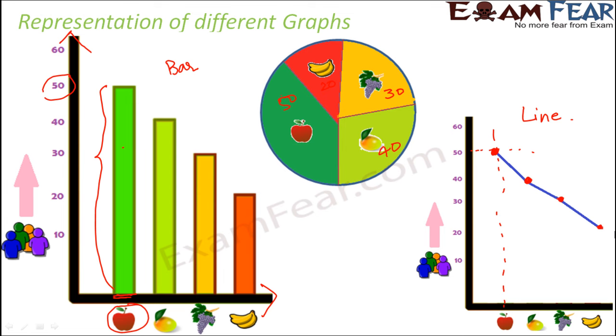This graph helps us determine how the liking changes as the fruits change from apple to mangoes to grapes to banana. Line graphs help us see the growth or declination of any variable.